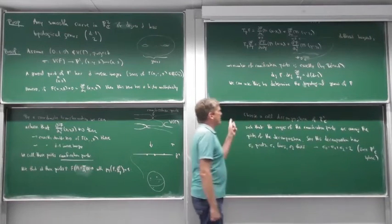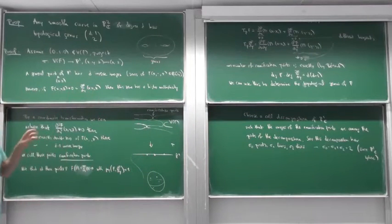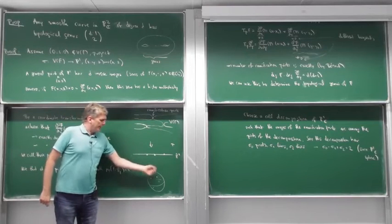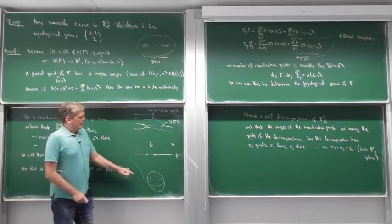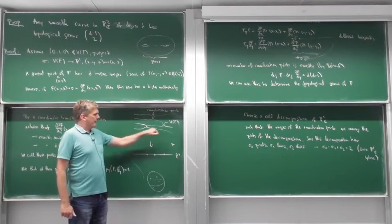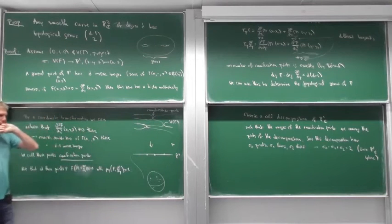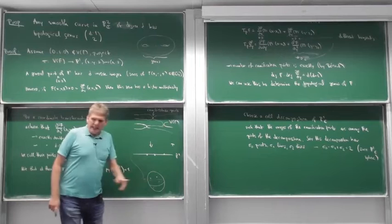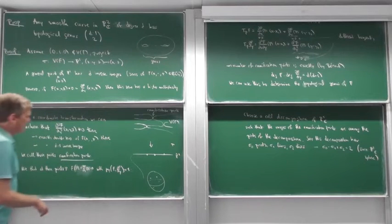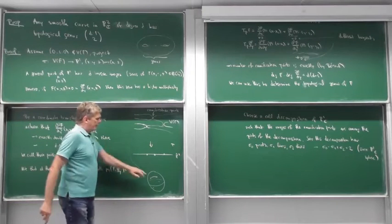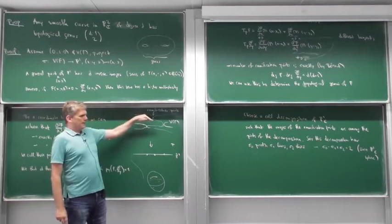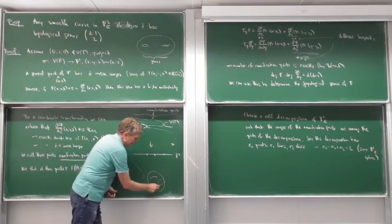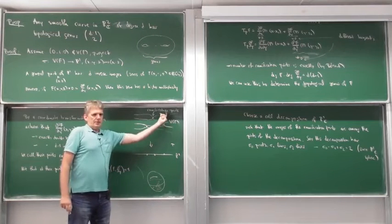Now we take the induced decomposition of the top space by taking inverse images of all cells. Over a ramification point we see d−1 points on top; over a general point we see d points. For any line or disk, no ramification happens, so we get exactly d lines and d disks in each sheet of the covering map.